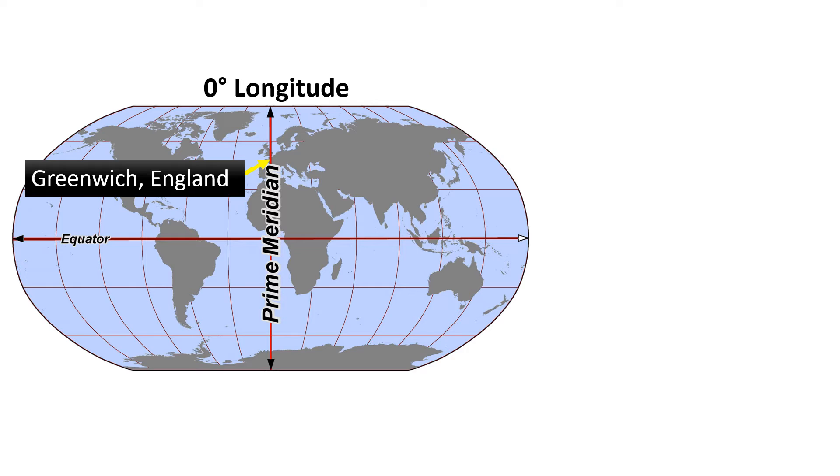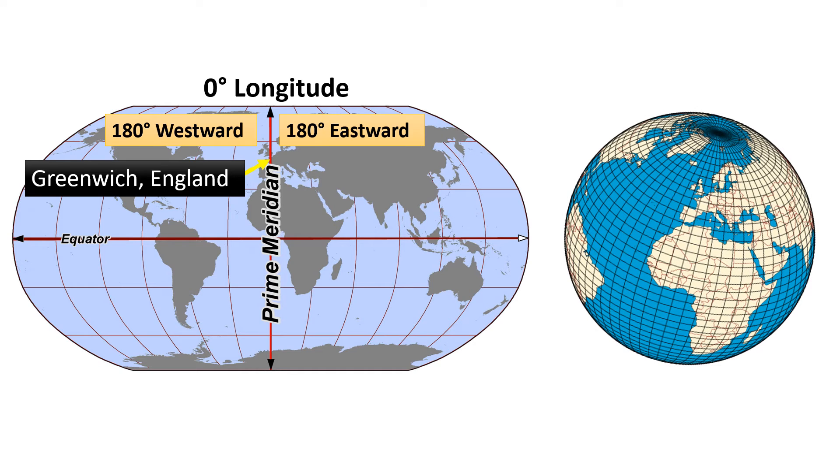Longitude increases to 180 degrees eastward and 180 degrees westward from the Prime Meridian, forming a full circle around the globe.